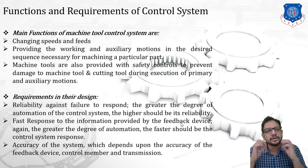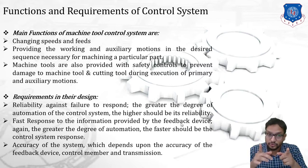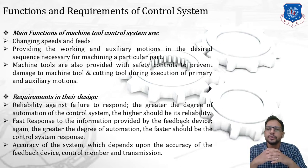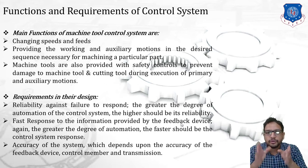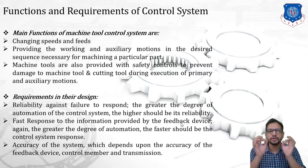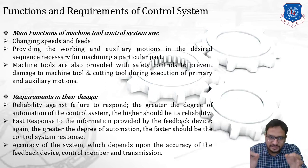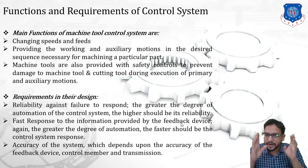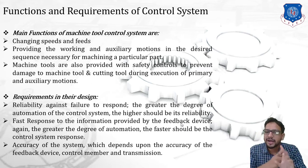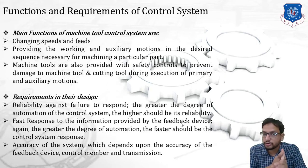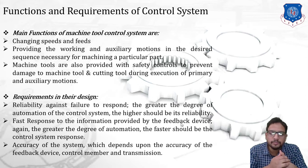The third function: machine tools are also provided with safety controls to prevent damage to the machine tool and cutting tool during execution of primary and auxiliary motions. The function of a control system is also to provide safety control. The parts of a control system are: transmitter (also called the control member), transmission element, operative member, and feedback mechanism — which could be a visual or servo mechanism.